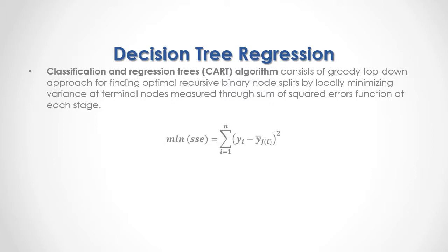As a formula, the minimization of the sum of square errors is equal to the sum from the first to the last of the differences between the output target feature data minus the terminal node output target feature mean, that result to the power of 2. The terminal node output target feature mean is equal to 1 divided by m, where m is the number of observations within the terminal node, multiplied by the sum from the first to the last of the output target data.